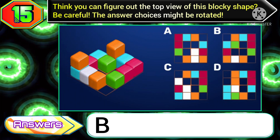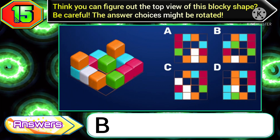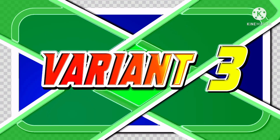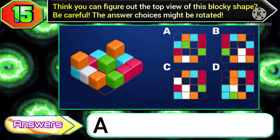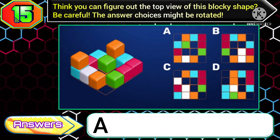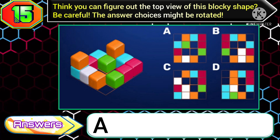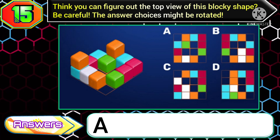If you get this type of image, choose option B. At last, in variant 3 of this question, the correct top view of this blocky shape is now in option A, so you need to choose option A.